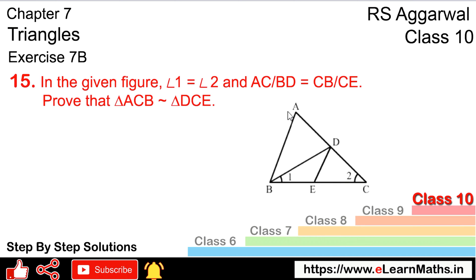Let's do question number 15 of XI7B, that is triangles. Question number 15: in the given figure, angle 1 equals angle 2, and AC/BD equals CB/CE. We need to prove that triangle ACB is similar to triangle DCE.